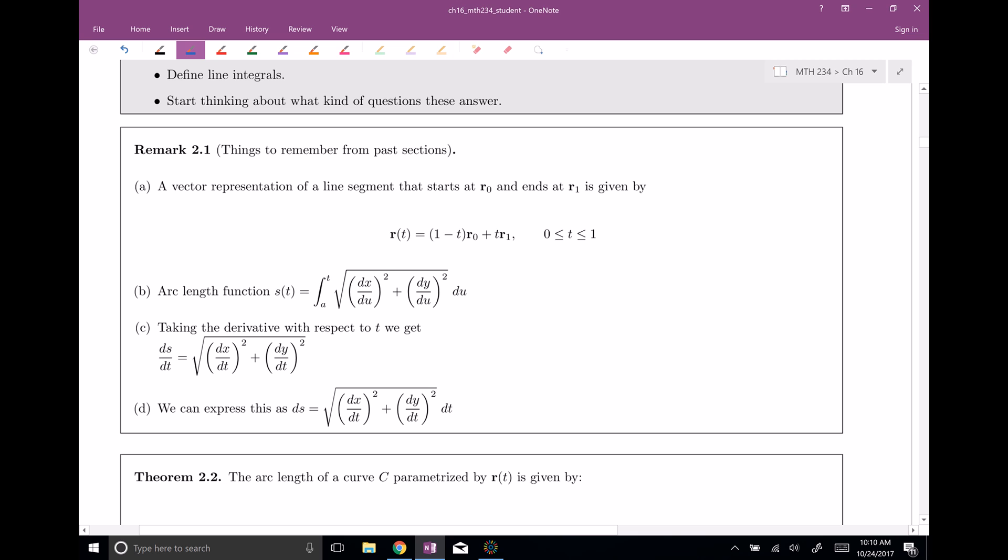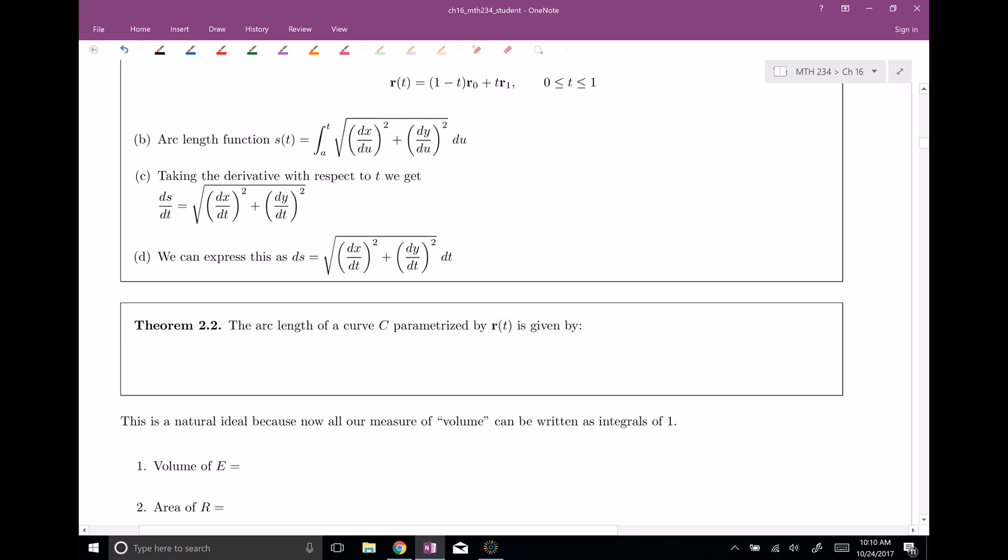And with this, we can actually get a slicker way to represent arc length. So the arc length of a curve parametrized by, well, some parametrization, r of t, is given by, well, you would integrate over c, and now you're gonna have just one ds. Because remember, ds is defined up here as the square root of dx dt squared dy dt squared dt, and that was the old formula for arc length. We've just given new notation to an old formula.